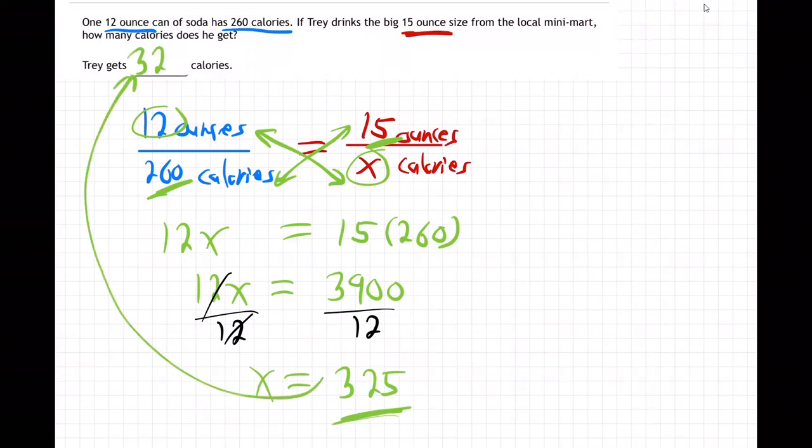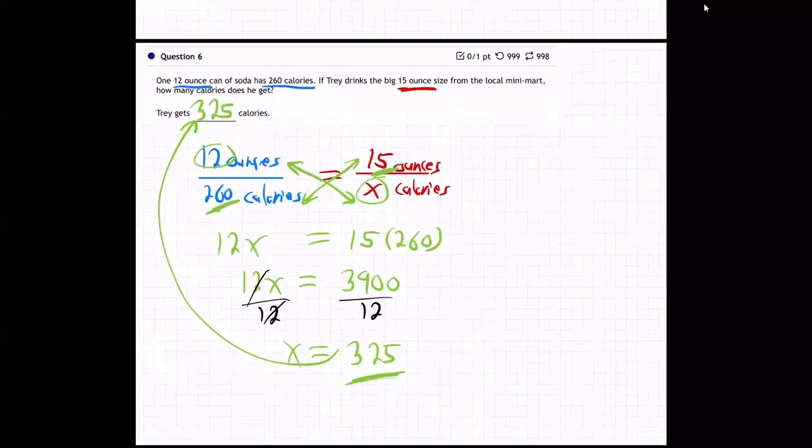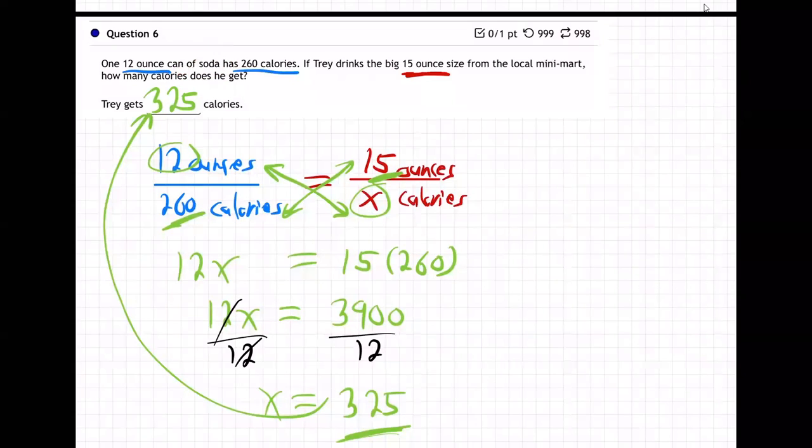For Mr. Trey, he drinks that bigger soda, he's getting more calories, right? That makes sense, doesn't it? 15 ounces is more than 12, so the answer should be more than 260 calories. It is. It's 325 calories.